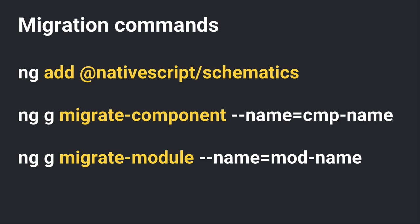To summarize the migration, there are three key commands. First, ng add @nativescript/schematics converts your existing web project into a NativeScript-compatible project — you should be on Angular 6 and Angular CLI 6.1. Then you can use ng migrate component and ng migrate module to help migrate individual modules and components.